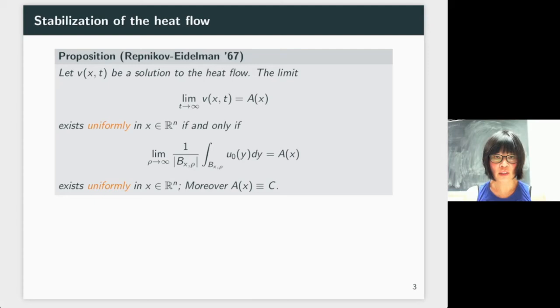So U₀(y) is our initial condition. B(x,ρ) is the ball centered at x with radius ρ, and the 1/|B(x,ρ)| in front is one over the measure of the ball.